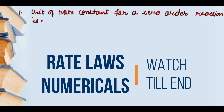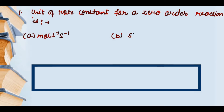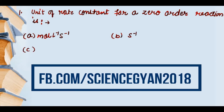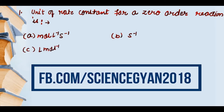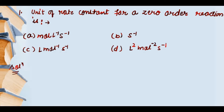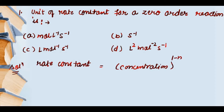The options are: (a) mol liter inverse second inverse, (b) second inverse, (c) liter mol inverse second inverse, and (d) liter square mol to the power minus 2 second inverse. Rate constant ki jo unit hai uski ek equation hoti hai — sabhi jo orders hain unki unit wahi equation ko follow karegi. The equation is: concentration to the power (1 minus n) into time inverse, where n is the order of reaction.